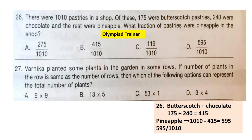Question 26: There are 1010 pastries in a shop. Of these, 175 were butterscotch, 240 were chocolate, and the rest were pineapple. What fraction of pastries were pineapple? To find the number of pineapple pastries, we add butterscotch and chocolate pastries (175 + 240) and subtract from 1010, giving 595. So the fraction of pineapple pastries is 595/1010. Option D is the correct answer.